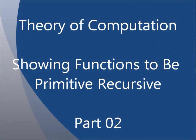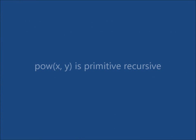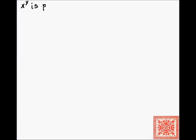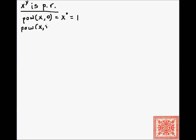Let's continue our discussion of primitive recursive functions. The next function we will show to be primitive recursive is the power function. Power(x, 0) = 1, and power(x, y+1) = x times power(x, y). This multiplies x by itself y times.